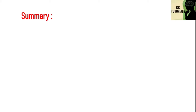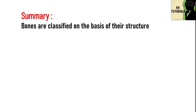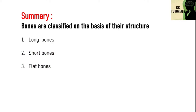Here is a summary of our lecture. In this lecture, we discussed that bones are classified on the basis of their structure. Based on their structure, our body has five different types of bones: long bones, short bones, flat bones, irregular bones and sesamoid bones. We have covered all the bones included in these five categories.